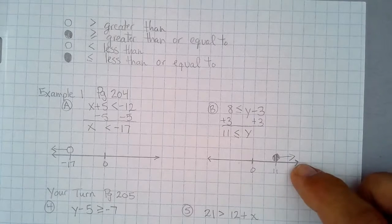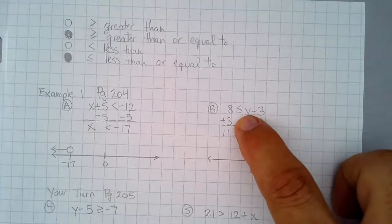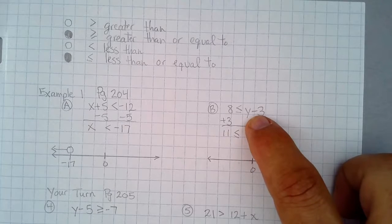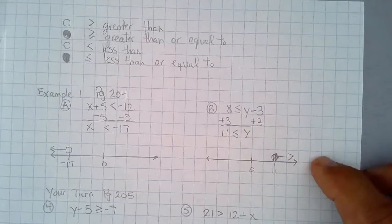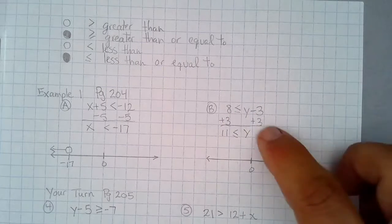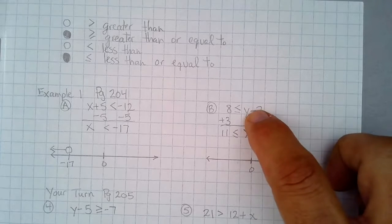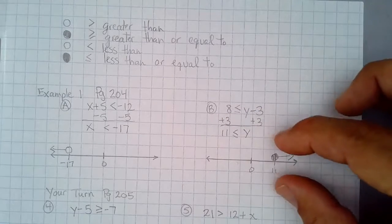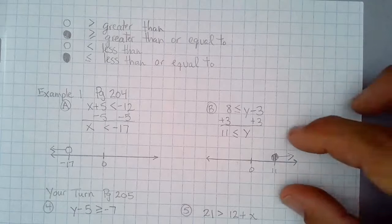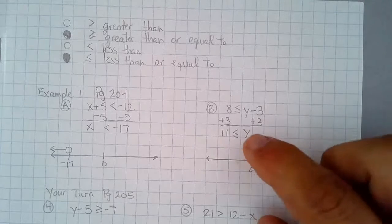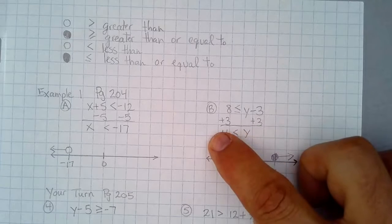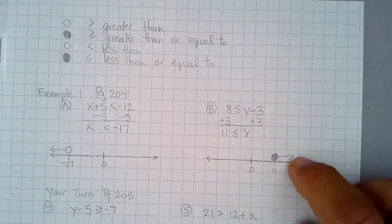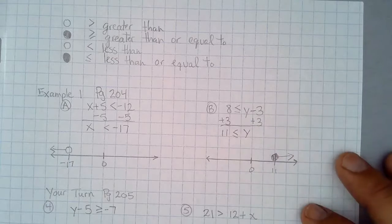What number will fit in here? 12 — put 12 in here: 12 minus 3 is 9, and 9 is greater than 8. I could put 20: 20 minus 3 is 17, and 17 is still bigger than that. So we have many solutions here that will work. That's the difference between an inequality and an equation — with an equation, it would just be y equals 11, just one number. But here, many numbers will work as a solution.